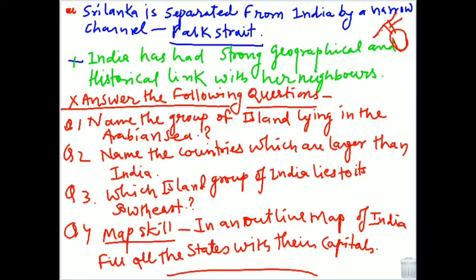Number two: name the countries which are larger than India. From the chapter we studied that the countries larger than India are Russia, Canada, USA, China, Brazil, and Australia — six countries in total — making India the seventh largest country in the world. Which island group of India lies to its southeast? The answer is the Andaman and Nicobar Islands.